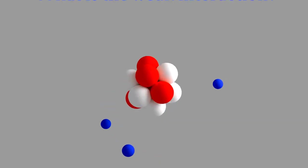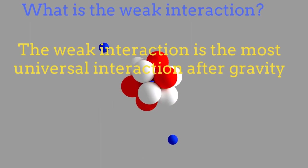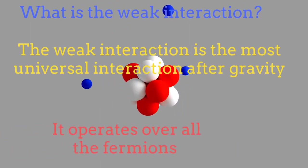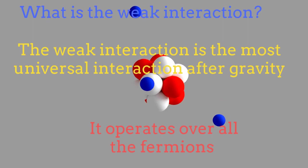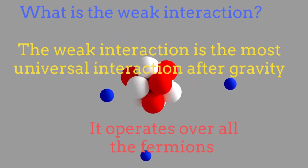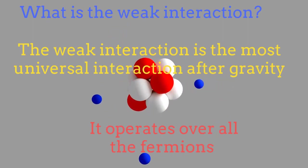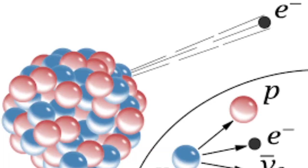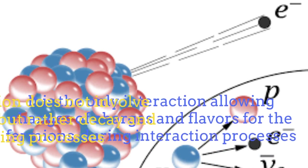On the other hand, we have the weak interaction, which is the most universal interaction after gravity because it is able to operate over all the fermions. The weak interaction is however particular.